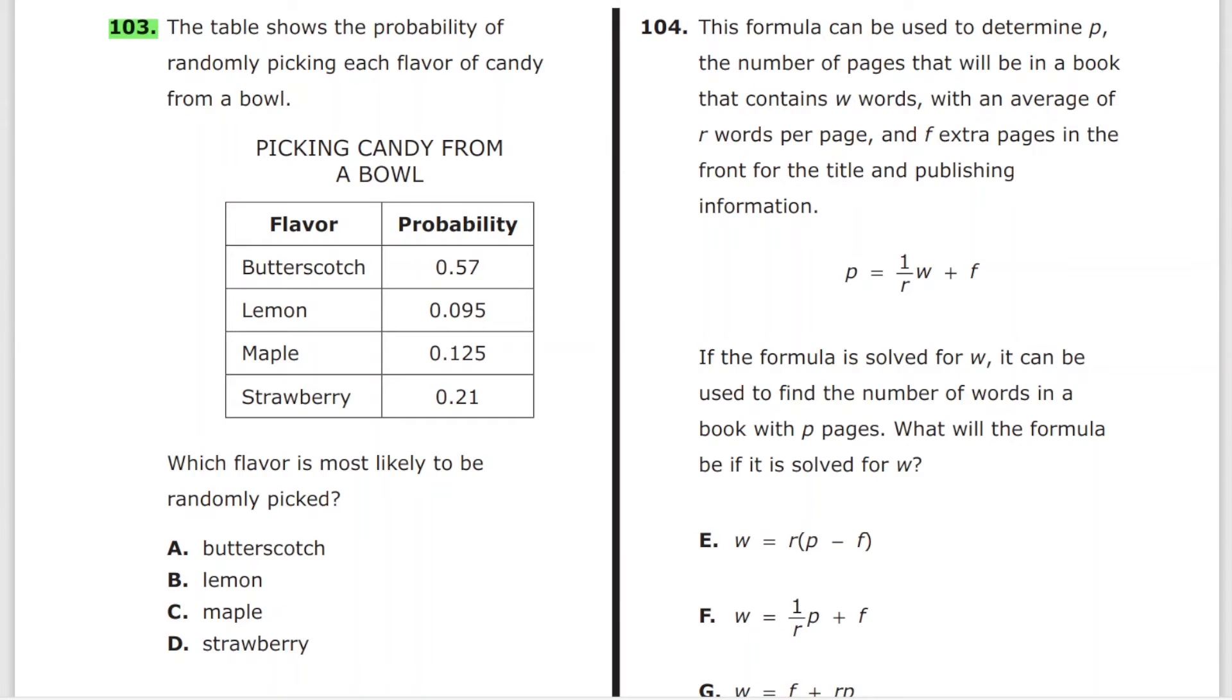Problem 103, Test A. It is a probability question, but not as difficult. The table shows the probability of randomly picking each flavor of candy from a bowl. Which flavor is most likely to be randomly picked? The answer is butterscotch. It's pretty evident because that's the largest one, which is 57% here. This is 9.5%, this is 12.5%, this is 21%. For this selection, there is no need to convert these decimals into the percentages. You just look for the highest decimal, which is 0.57, the butterscotch.